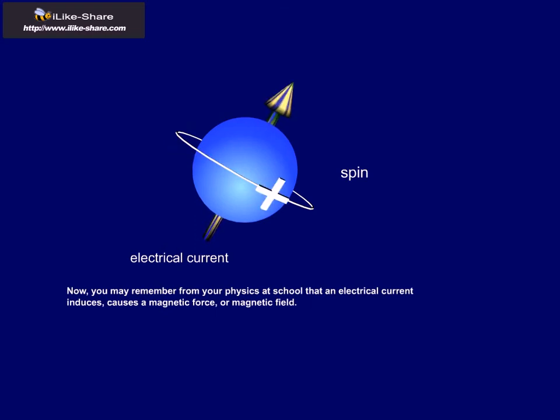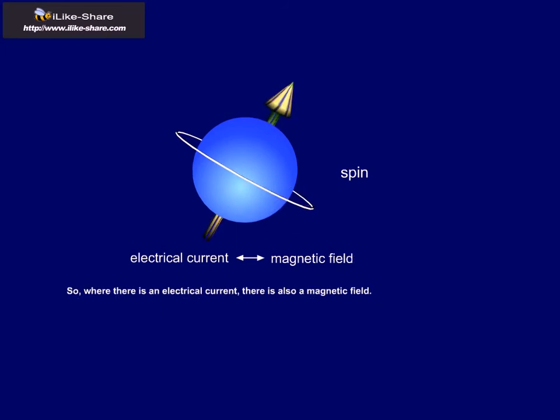Now, you may remember from your physics at school that an electrical current induces, causes a magnetic force, or magnetic field. So, where there is an electrical current, there is also a magnetic field.